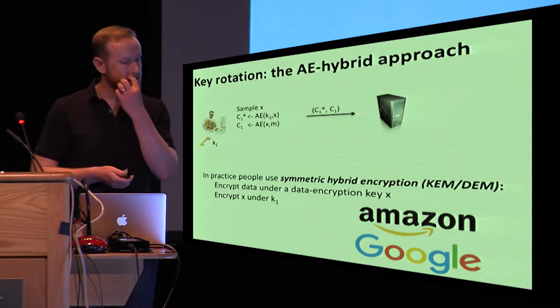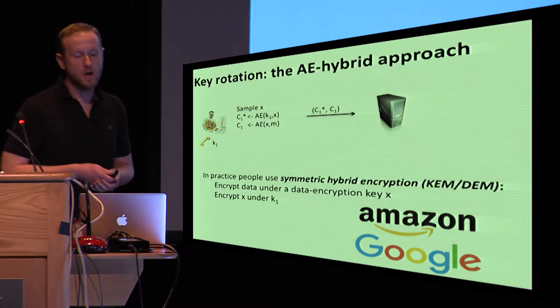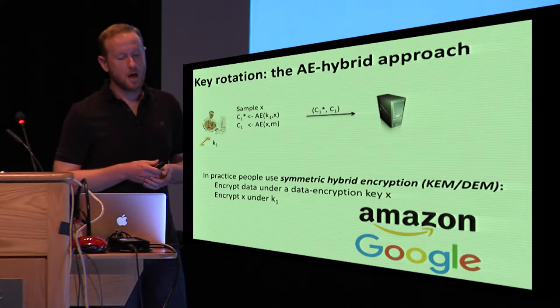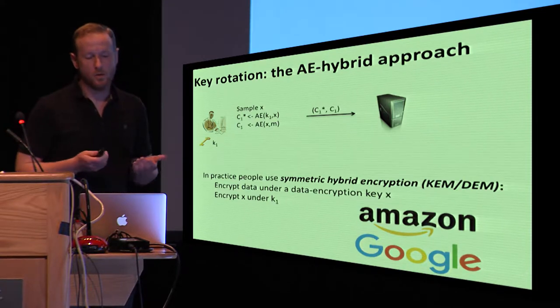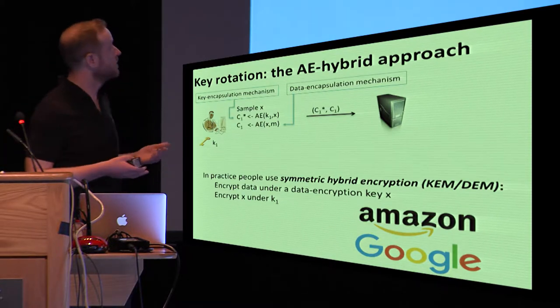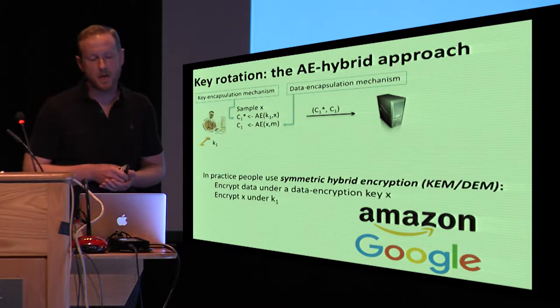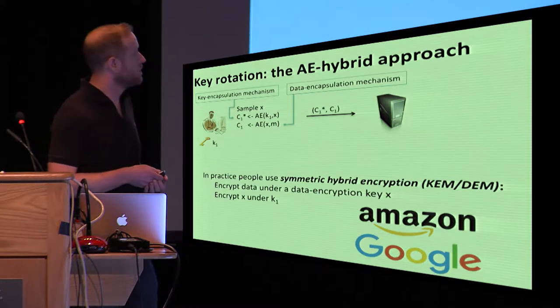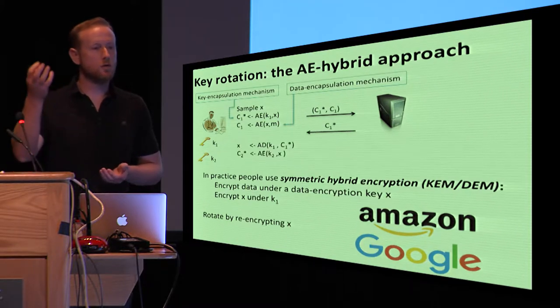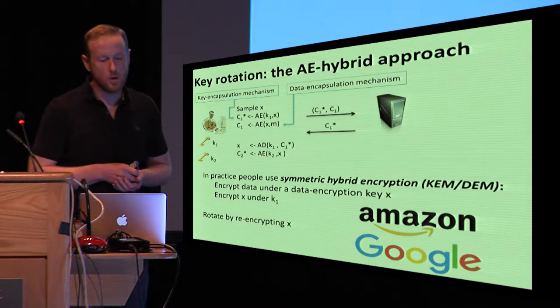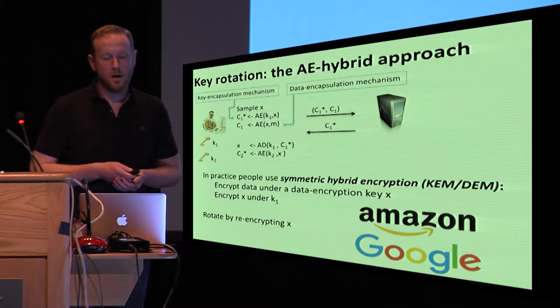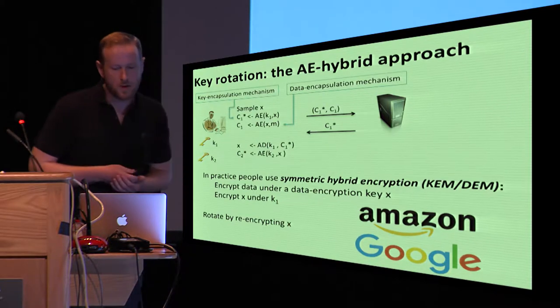So in practice, what people do is use what we'll call the authenticated encryption or a hybrid approach. That just means we're going to have an encryption that's like two parts. The first part is going to be an encryption under K1 of a data encryption key that we'll label as X, and the second portion will be an encryption of the message under X. Sometimes we refer to these as key encapsulation mechanisms and data encapsulation mechanisms or KEM-DEM style constructions. This is nice because when you want to do a rotation, you can just do a rotation by re-encrypting X. You choose a new key K2, fetch this short header, this KEM-ciphertext C1-star, and then decrypt that and then re-encrypt under the new key K2.